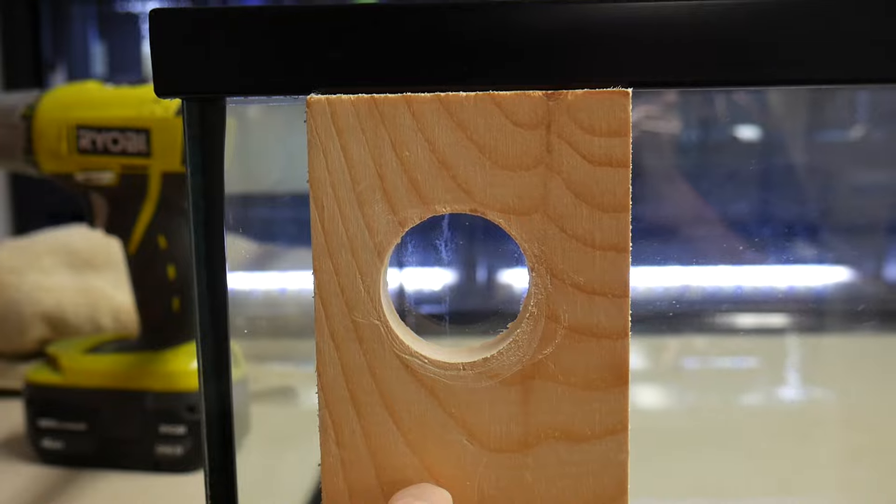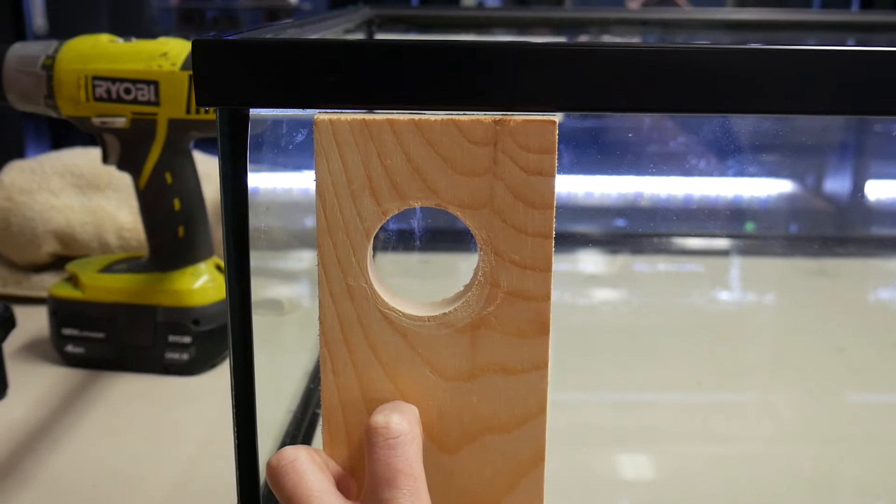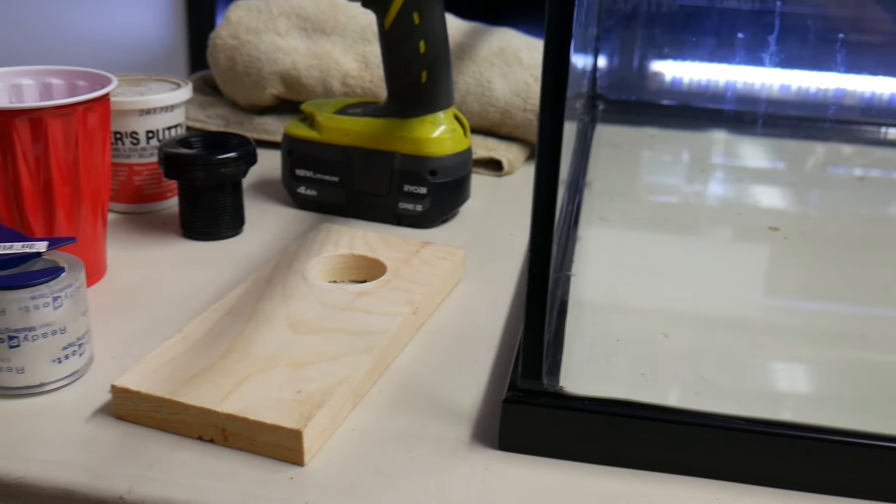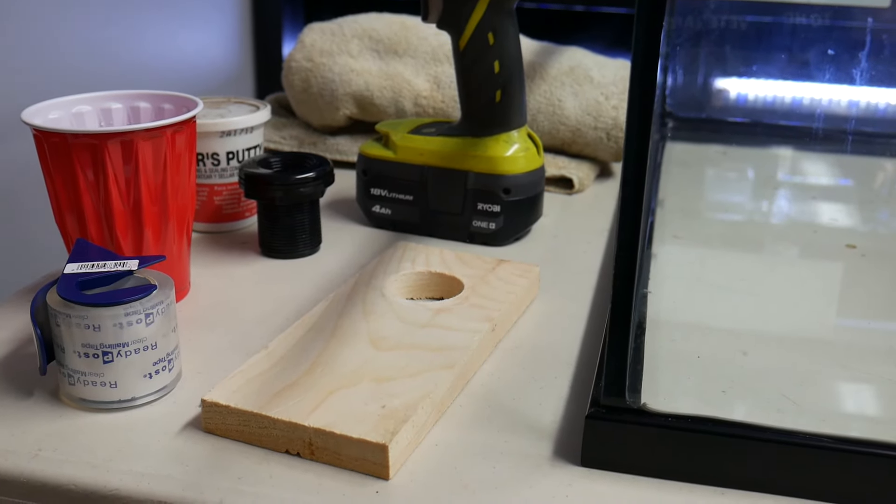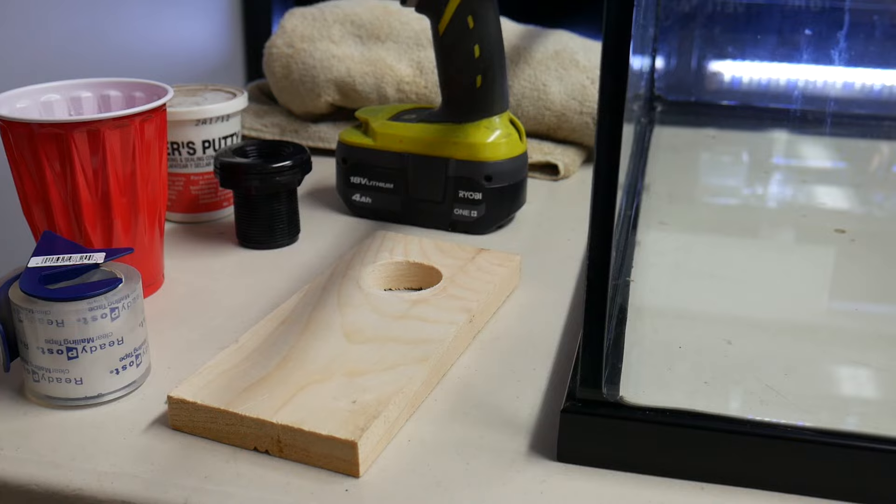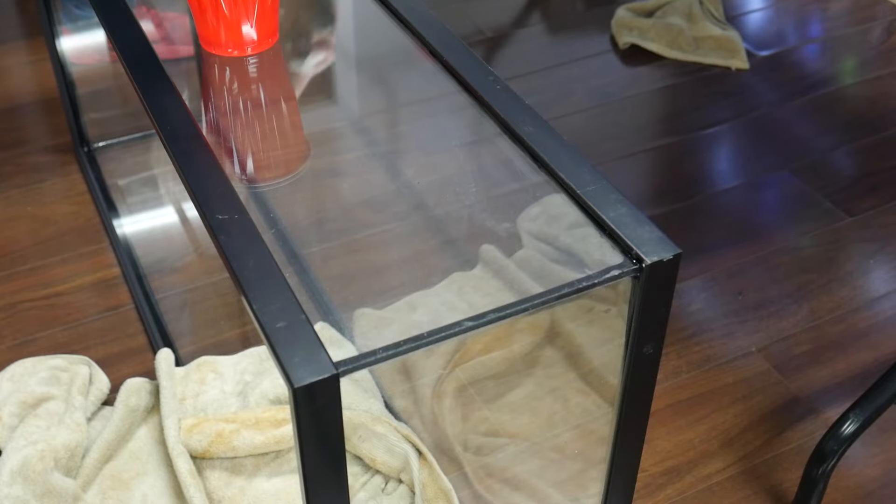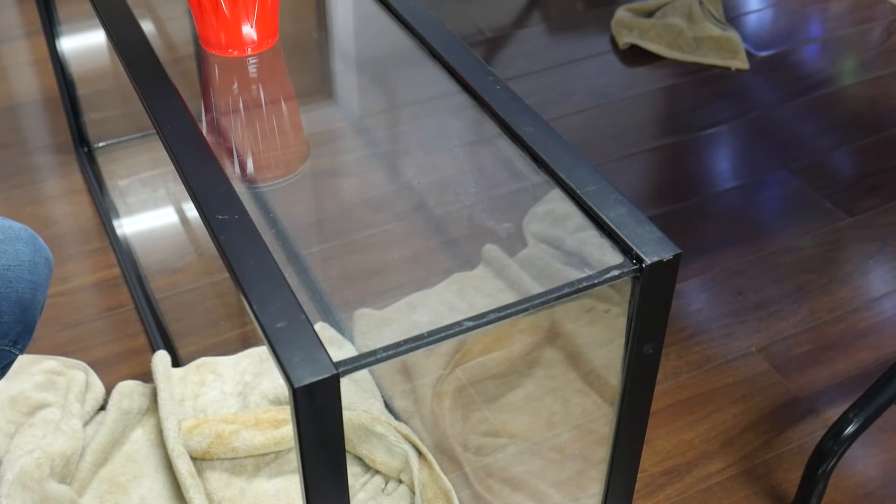When I'm making this wooden template I like to try to make sure that the hole I'm going to be drilling in the glass aquarium is going to be no less than one and a half inches away from the top and away from the side edge, away from any of the edges of the glass. I try to stay at least one and a half inches away.